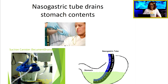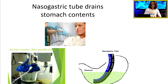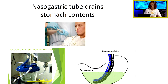The nasogastric tube drains stomach contents into a suction canister connected to the wall, which very gently pulls the stomach contents out. We typically use an NG tube to rest the bowel — when a patient has had surgery, a bowel blockage, or when nothing is moving through the bowel.